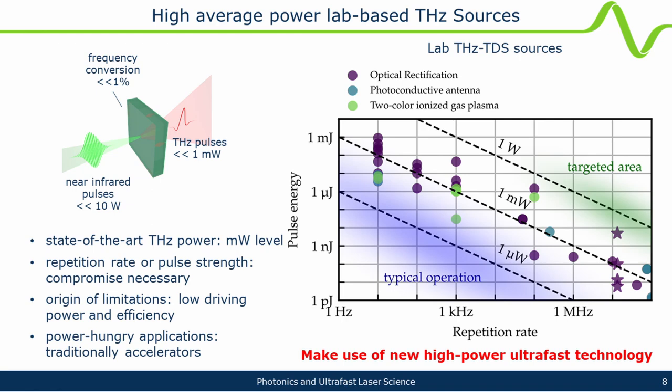We started in a middle ground, building lasers that operate at megahertz repetition rate — high for spectroscopy people, low for applications where hundreds of megahertz is typical. It's a bit in between and can address both applications while also giving possibilities to expand in both directions.